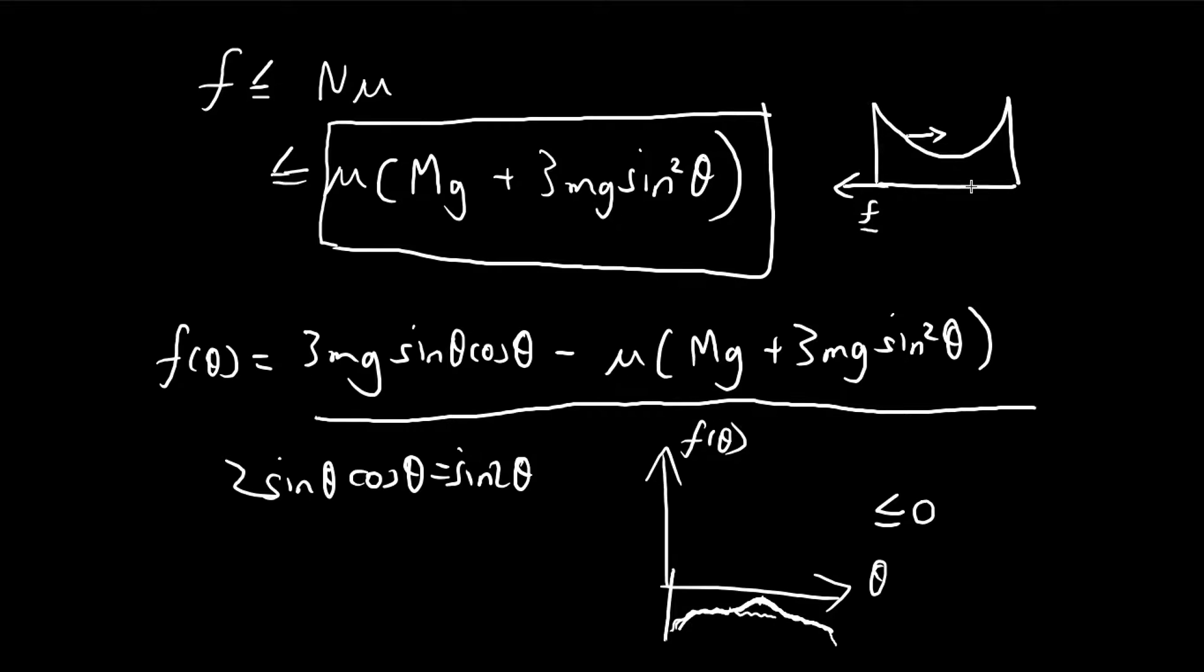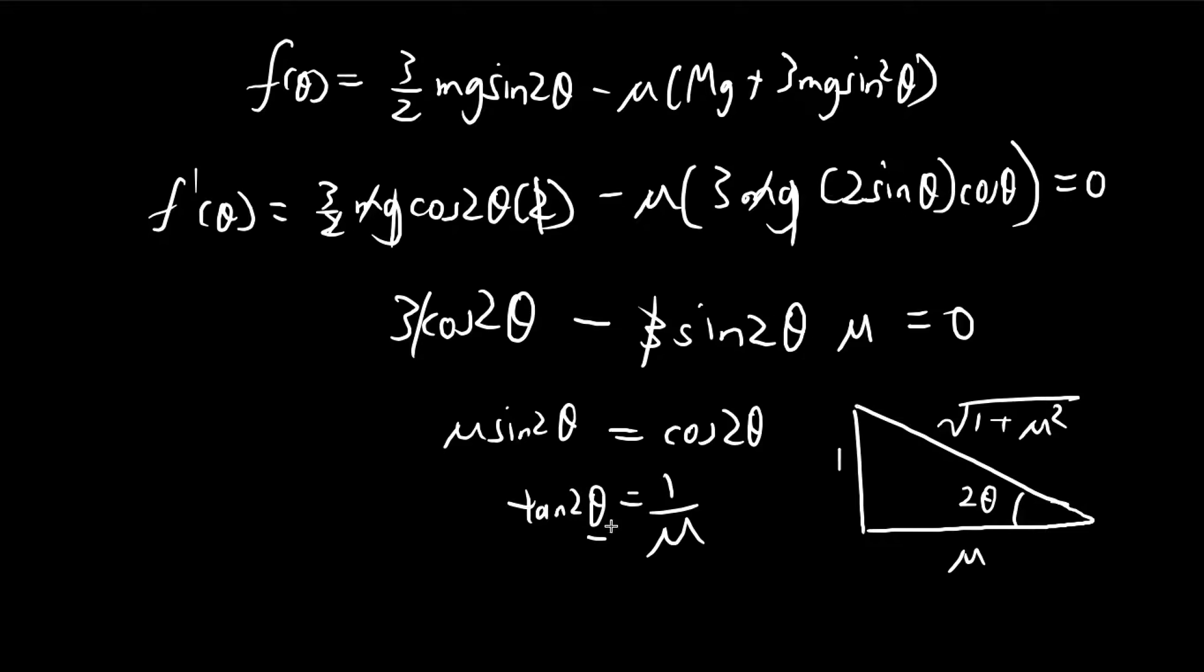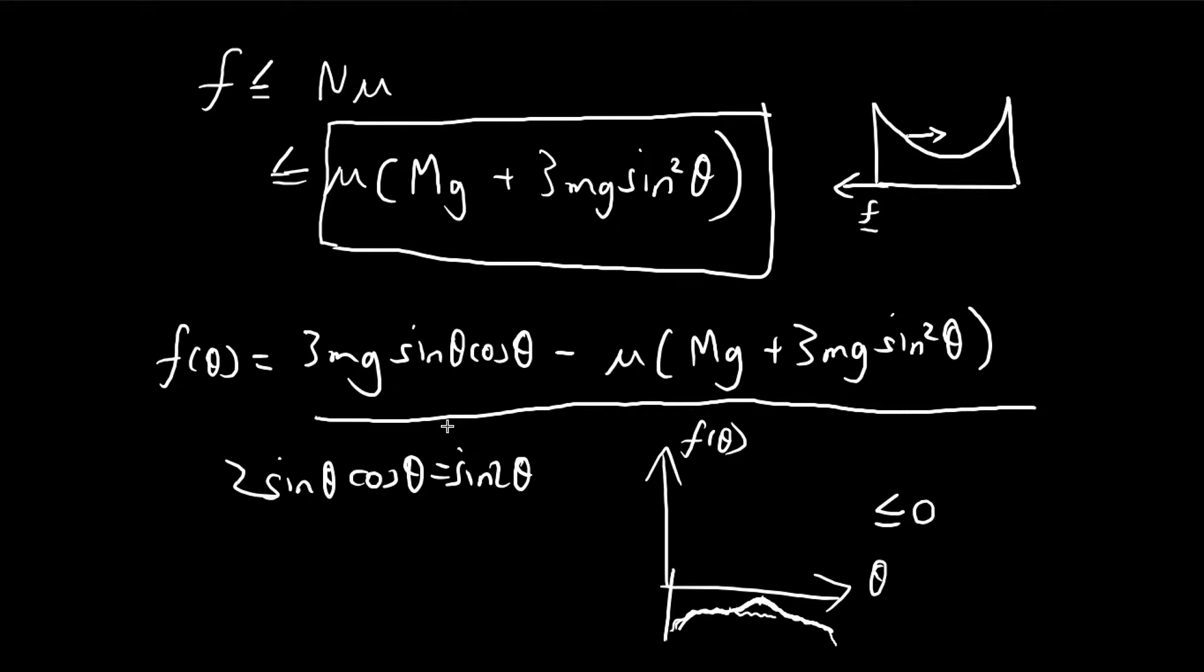We know that the condition for this thing to not move is that when it reaches the maximum, it has to always be smaller than or equal to zero. So we just need to substitute this condition into this formula and let that be always smaller than or equal to zero.